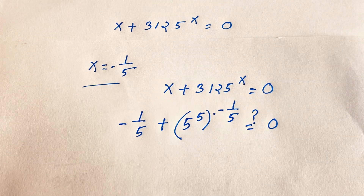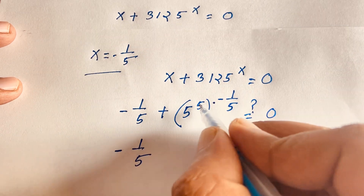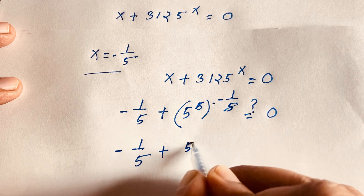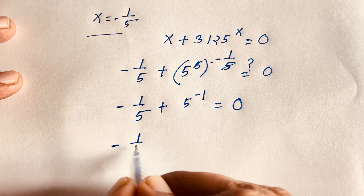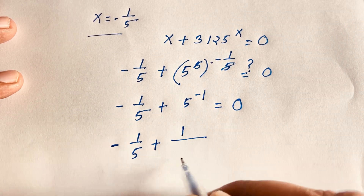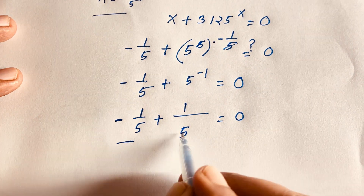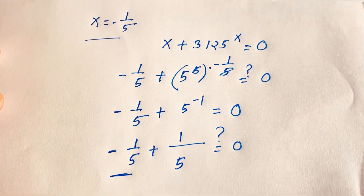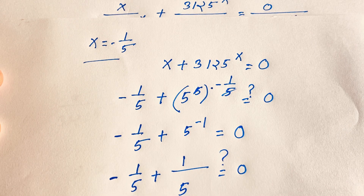Because x equals minus 1 over 5, the expression simplifies to minus 1 over 5 plus 5 to the power negative 1. Using the rule a to the power negative n equals 1 over a to the power n, this becomes minus 1 over 5 plus 1 over 5, which equals 0. Verified! So x equals minus 1 over 5 is our final answer.